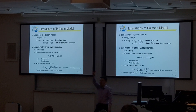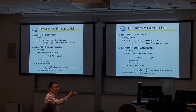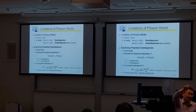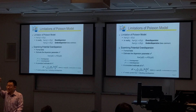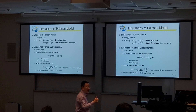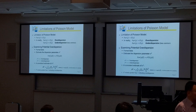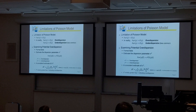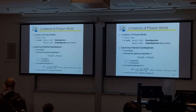In the Poisson model, y-hat is the expected value of y. In linear regression, the expected value of y is simply the linear combination of x and beta. In binary response models, y is 0 or 1, so the expected value of y equals the probability that y equals 1 — the probability of success.